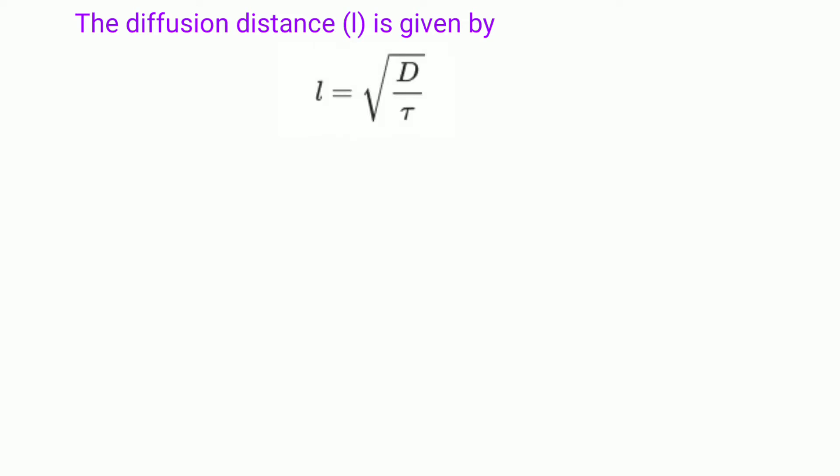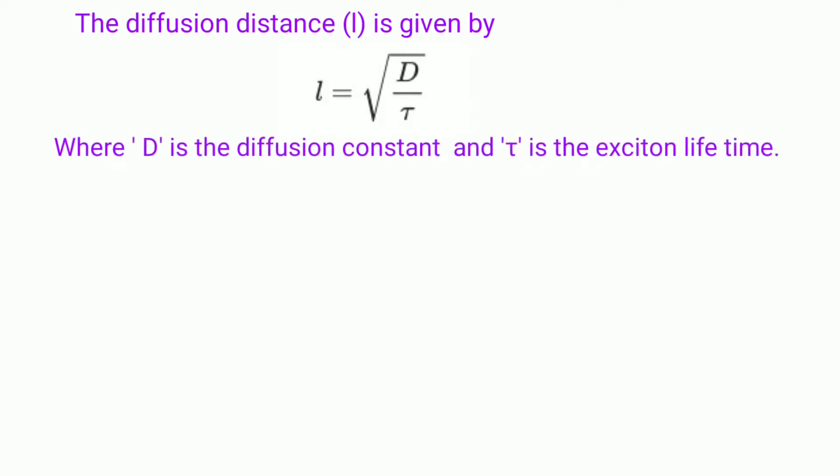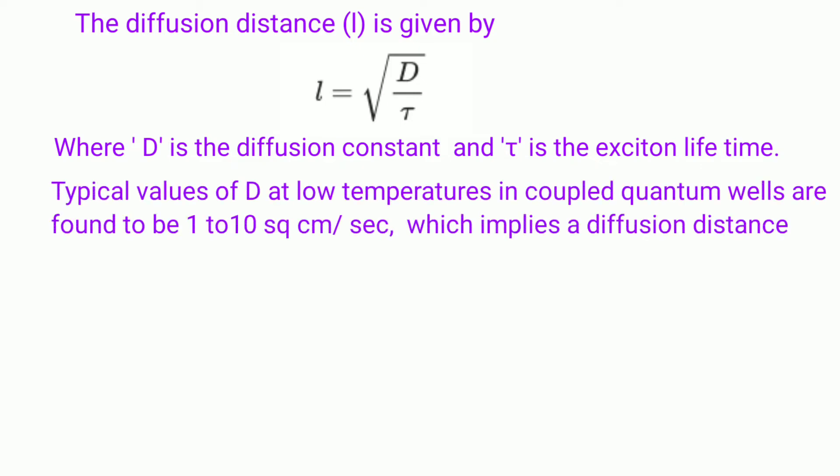The diffusion length L is given by L = √(D·τ), where D is the diffusion constant and τ is the exciton lifetime. Typical values of D at low temperature in coupled quantum wells are found to be 1 to 10 cm² per second, which implies a diffusion distance of hundreds of microns.